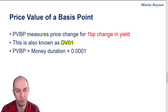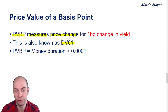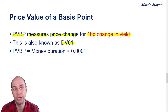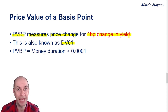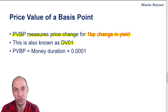The formal definition is that the PVBP measures the monetary change in the price of your bond given a 1 basis point change in yield. This measure can be very useful if you are operating with bonds with embedded options — callables or putables — which may get called or put if there's a significant change in yield.